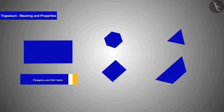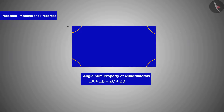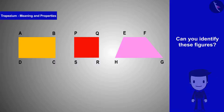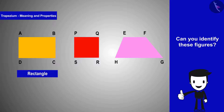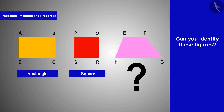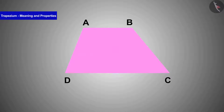So far in geometry we have learnt about polygons and types of polygons, quadrilateral and angle-sum property of a quadrilateral. Can you identify these figures? All these figures are quadrilaterals — the yellow figure is a rectangle, the red figure is a square, but we don't know about this pink figure. Let's come together today to learn about this shape.